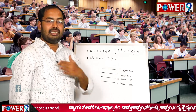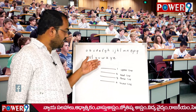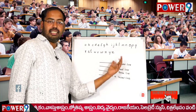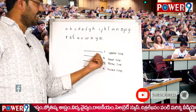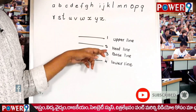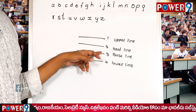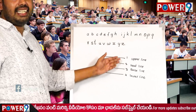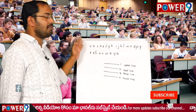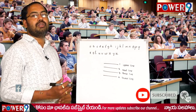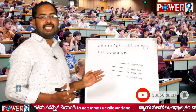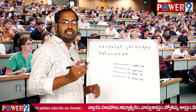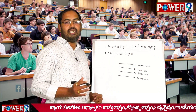Each line in the four-rule notebook is given a name. The first line is the upper line, the second is the headline, the third is the baseline, and the last is the lower line. These four lines are very important to learn the concept of handwriting — we need to know how each and every letter exists within these lines.